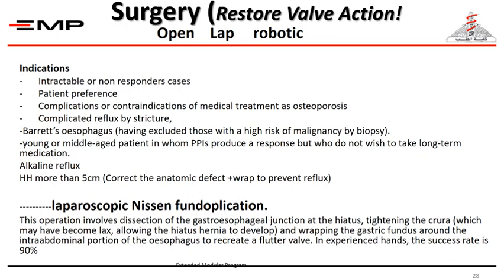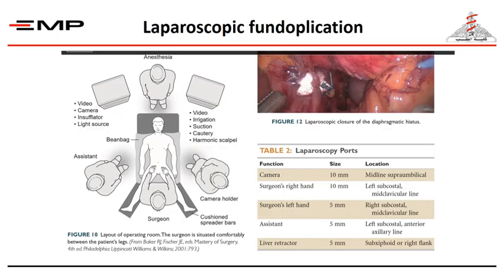The surgery is laparoscopic Nissen fundoplication — creating a new valve or wrap around the lower end of the esophagus to augment lower esophageal sphincter pressure, preventing gastric acid reflux going up into the esophagus. Laparoscopic fundoplication is now the operation of choice, and importantly it is done laparoscopically to minimize pain and allow early recovery.